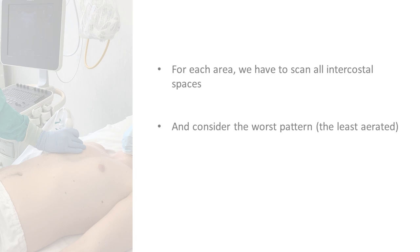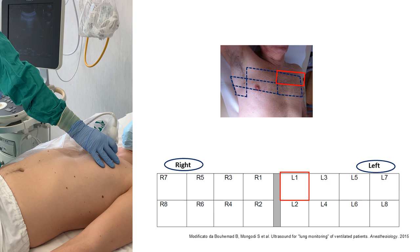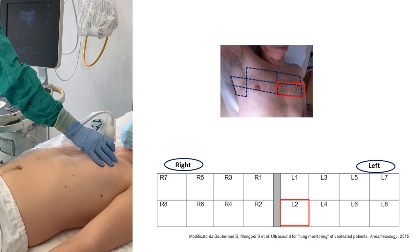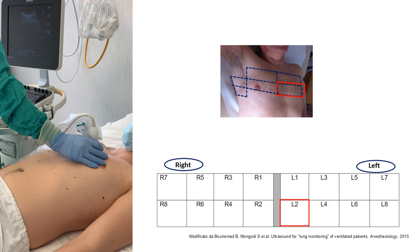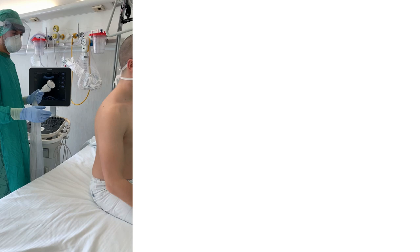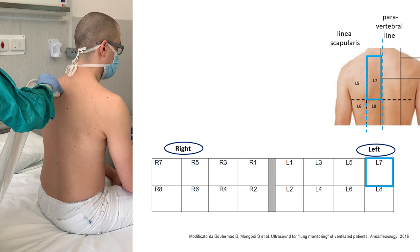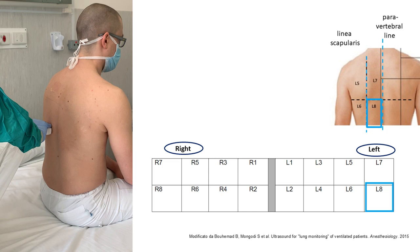Next we move to the left anterior thorax upper part, aiming to clearly visualize the lung sliding. We then move to the left anterior thorax lower part, although here we often find the heart. For the left lateral thorax, we do the same as for the right hemithorax. If the patient is able to sit, we can scan the posterior chest. Here we scan the left posterior thorax upper part, next the posterolateral upper part — where visualization of the lung is limited by the scapula — then the posterior lower part and posterolateral lower part.